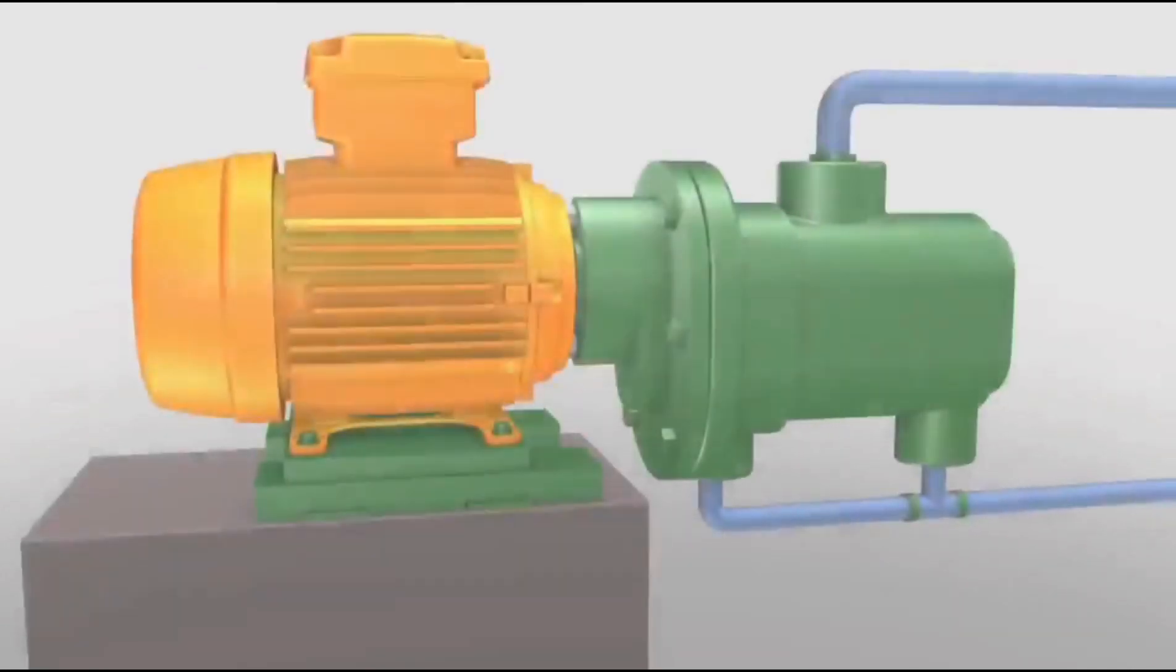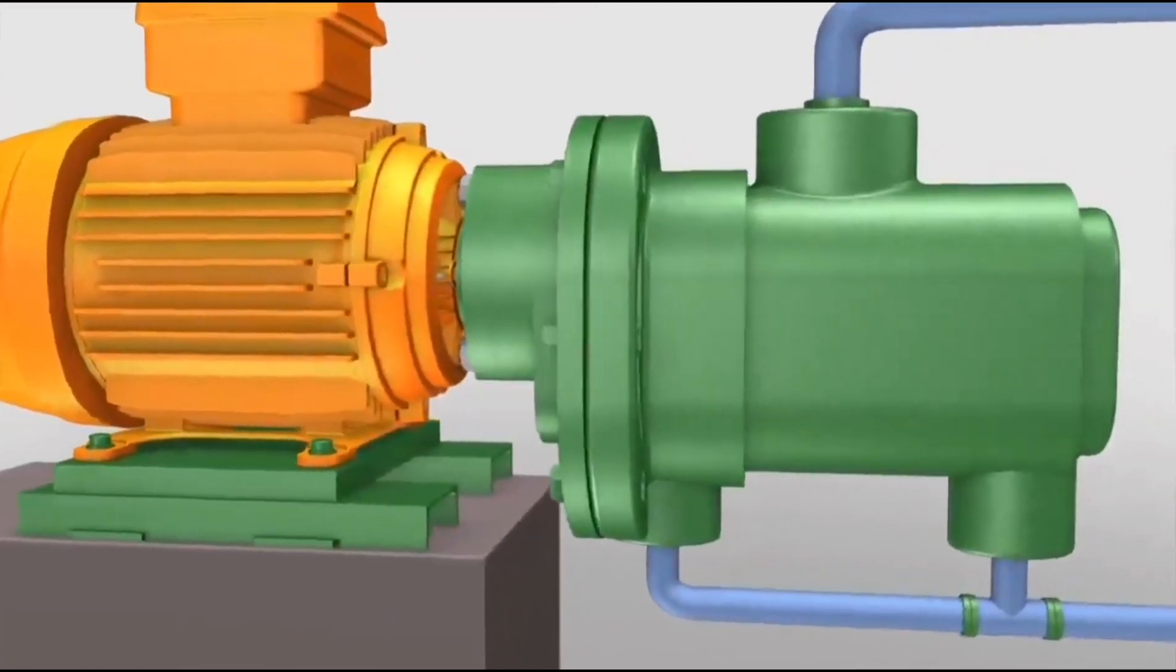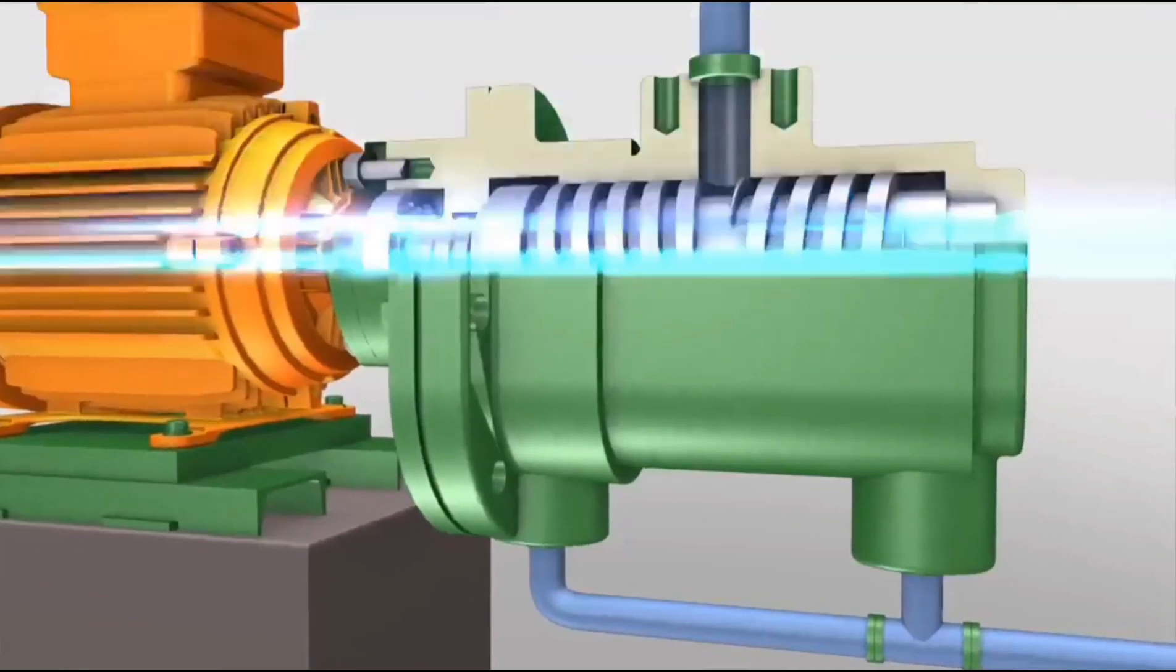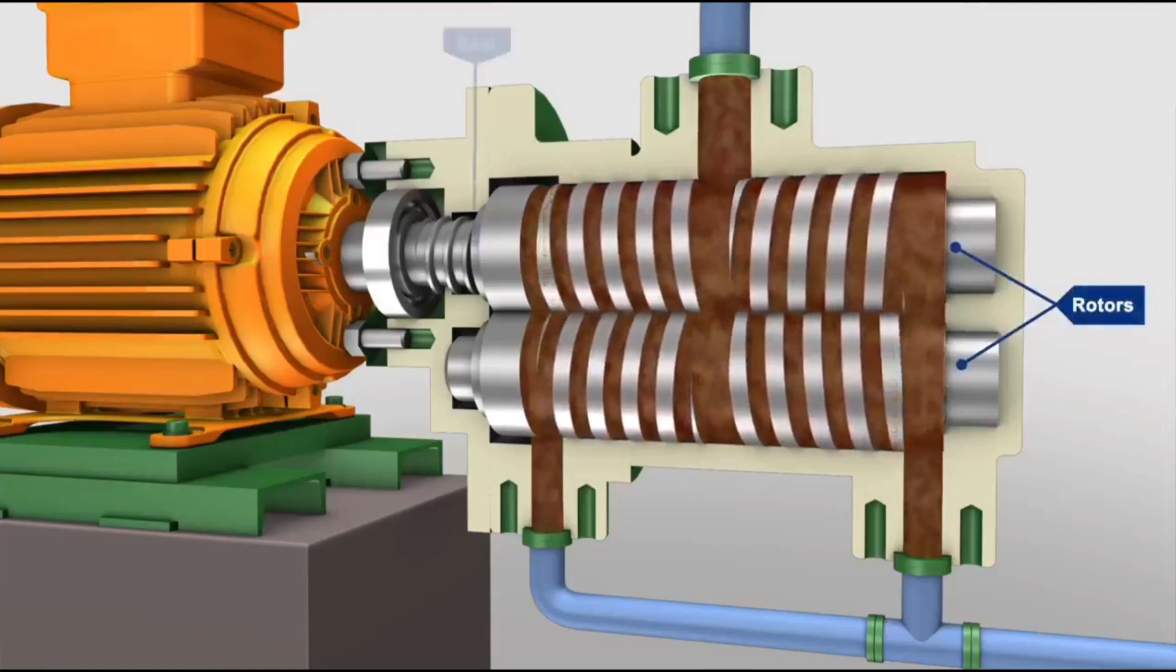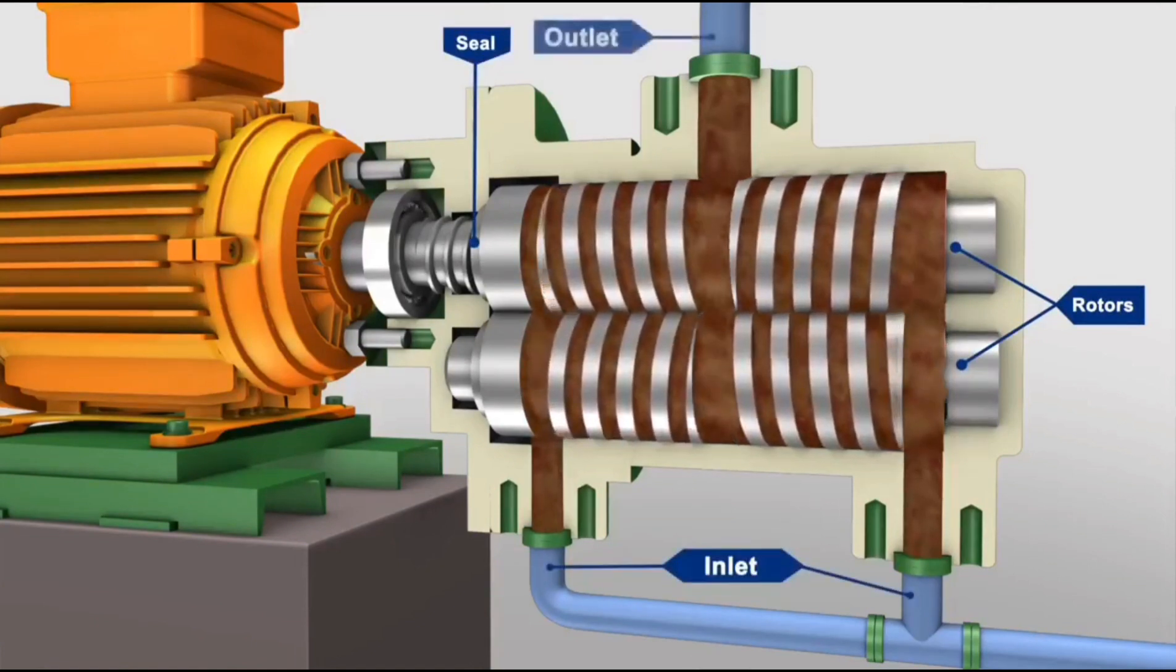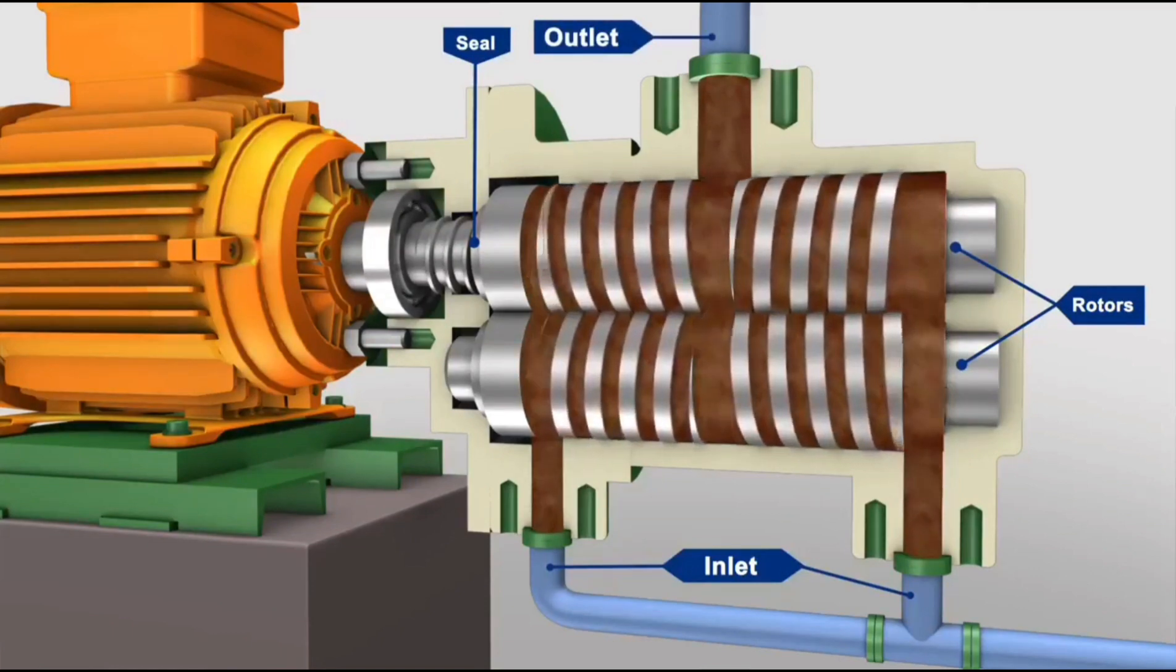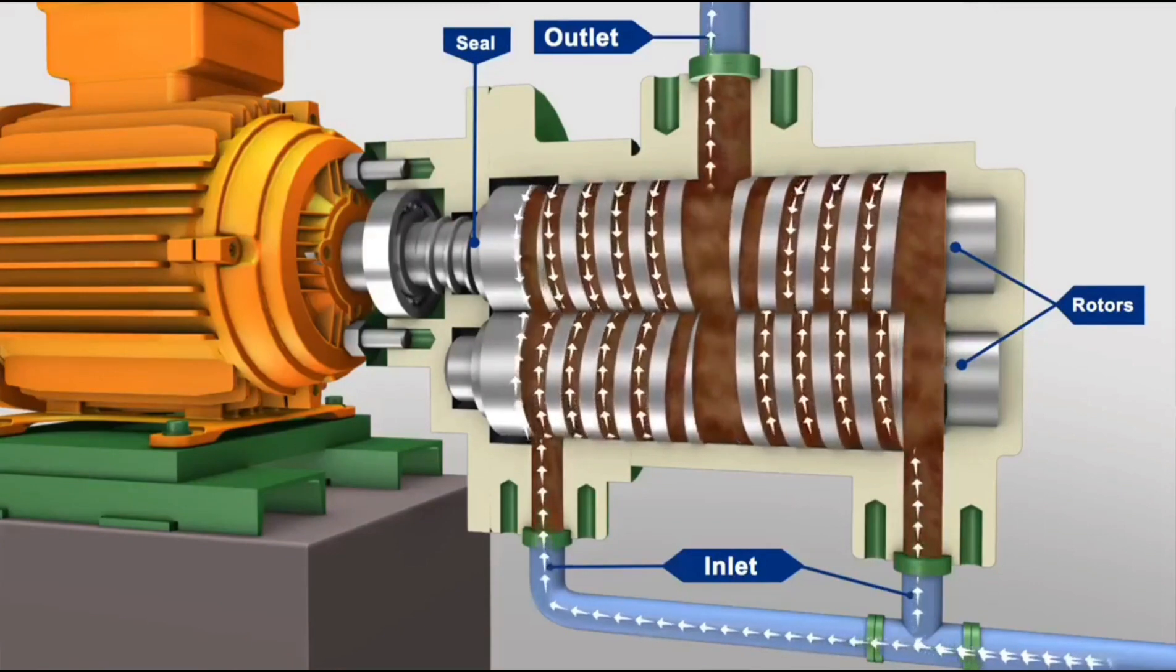In screw pumps, it is the intermeshing of the threads on the rotors and the close fit of the surrounding housing that creates one or more sets of moving seals in a series between the pump inlet and outlet. These sets of seals, or locks as they are sometimes referred to, act as a labyrinth and provide the screw pump with its positive pressure capability.